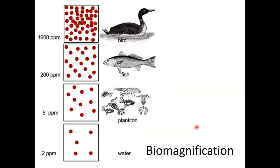Biomagnification is when a toxin like mercury moves through an ecosystem. The problem with biomagnification for humans is that we tend to like to eat things at the top of the food chain. For example, let's pretend this bird could be eaten — let's say it's a form of duck.